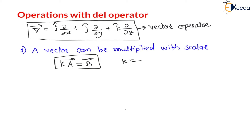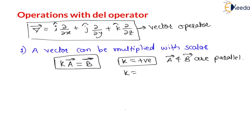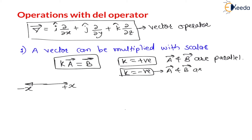If this scalar k is positive, then both will be in the same direction — therefore vector a and vector b are parallel. If this scalar k is negative, then direction will change by 180 degrees, meaning they are called anti-parallel. Anti-parallel means they are parallel but in opposite directions.